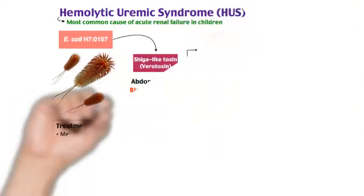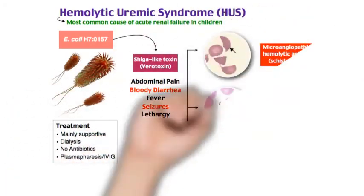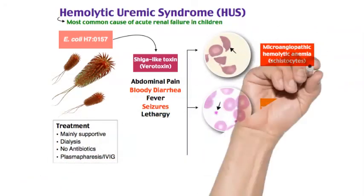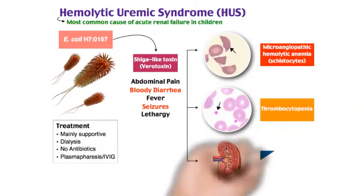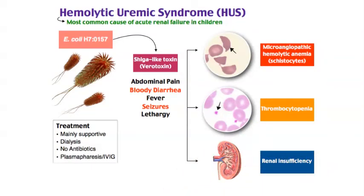To summarize, Hemolytic Uremic Syndrome is caused by E. coli O157:H7 strain. Cardinal clinical features include abdominal pain, bloody diarrhea, and fever; some neurological symptoms, though rare, can occur, such as seizures and lethargy. Treatment includes supportive care, dialysis, and plasmapheresis; intravenous immunoglobulin has also been tried in some cases. Cardinal events include anemia, thrombocytopenia, and renal insufficiency.